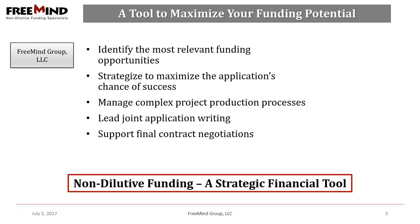We submit over 500 applications every year on behalf of our clients, and that's a great deal of experience, knowledge, and expertise which we put together to increase your chances of winning awards and to help achieve the largest non-diluted awards possible. Our main objective is to help our clients get as much money as possible from non-diluted sources. We at the Freemind Group see non-diluted funding as an essential tool to maximize your funding potential, and we conduct a very systematic and strategic approach towards non-diluted funding.